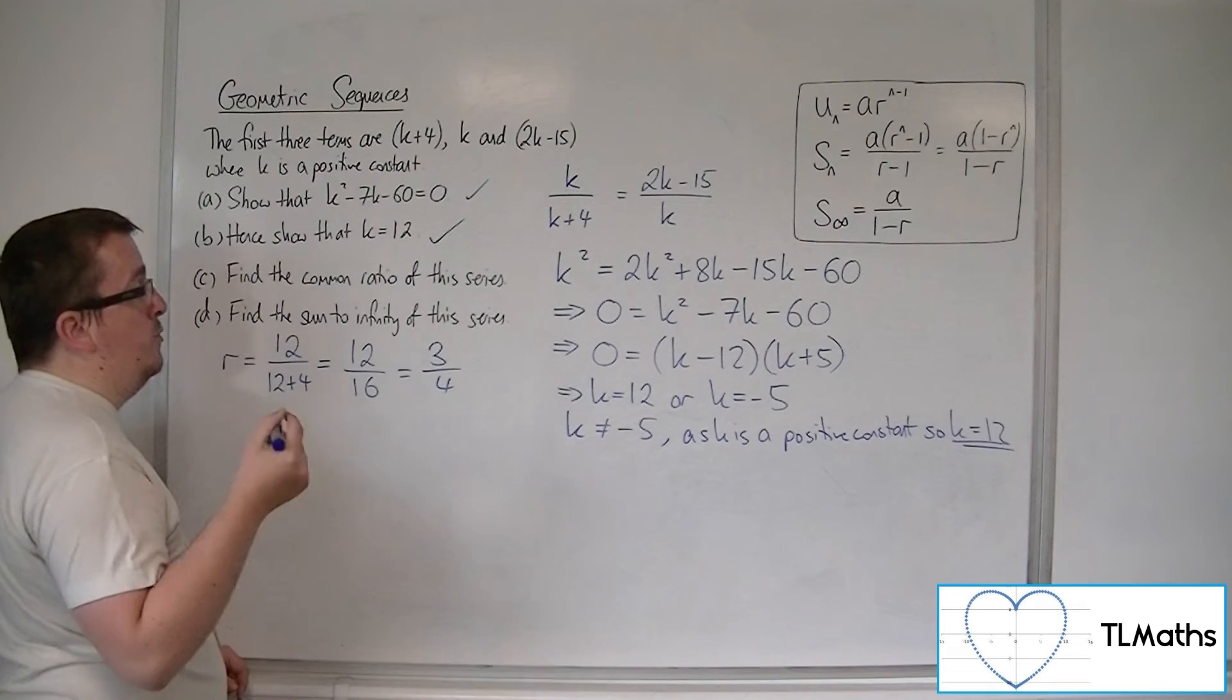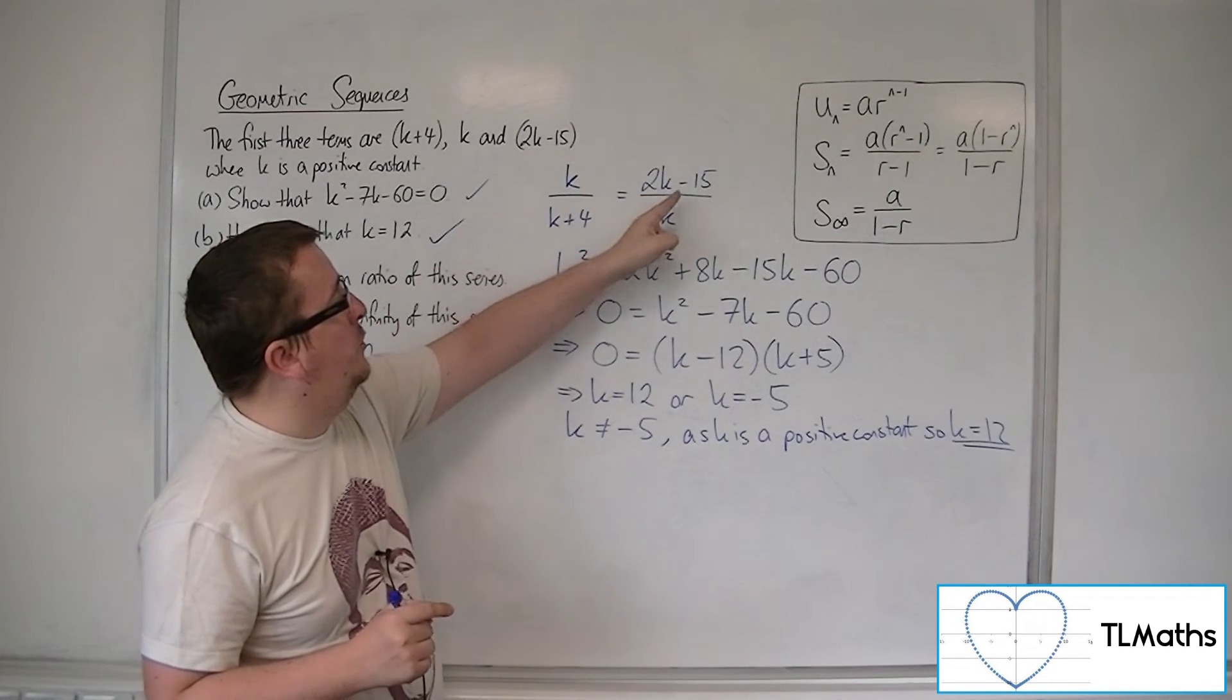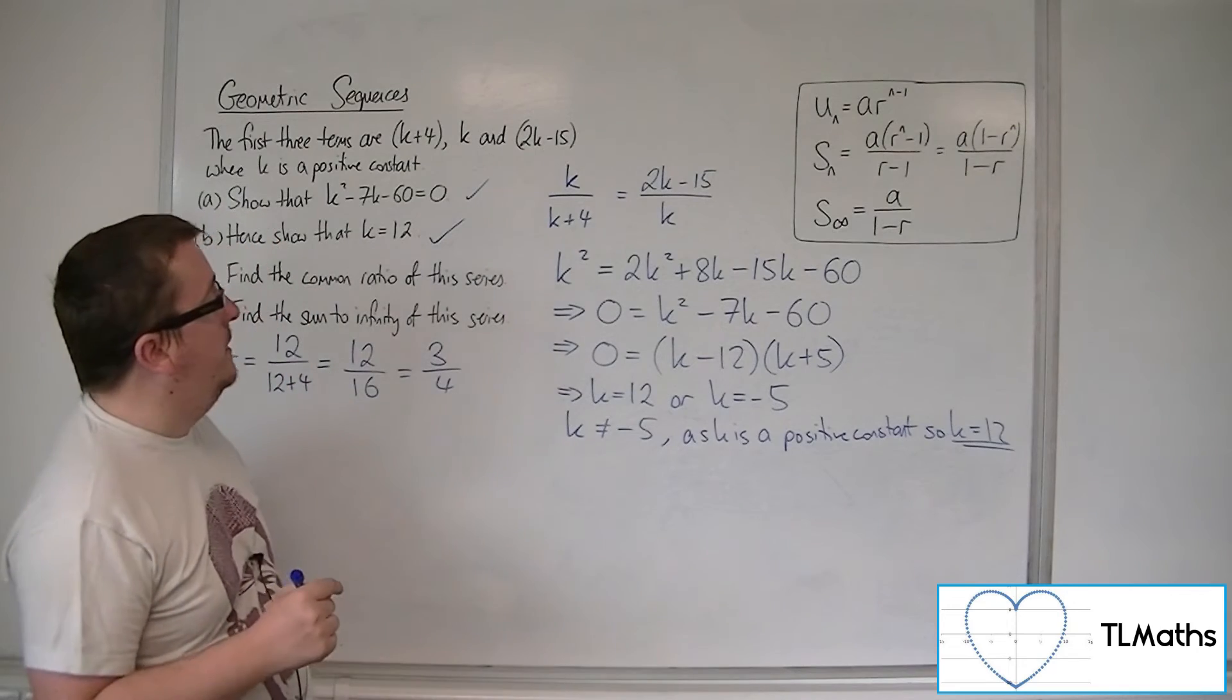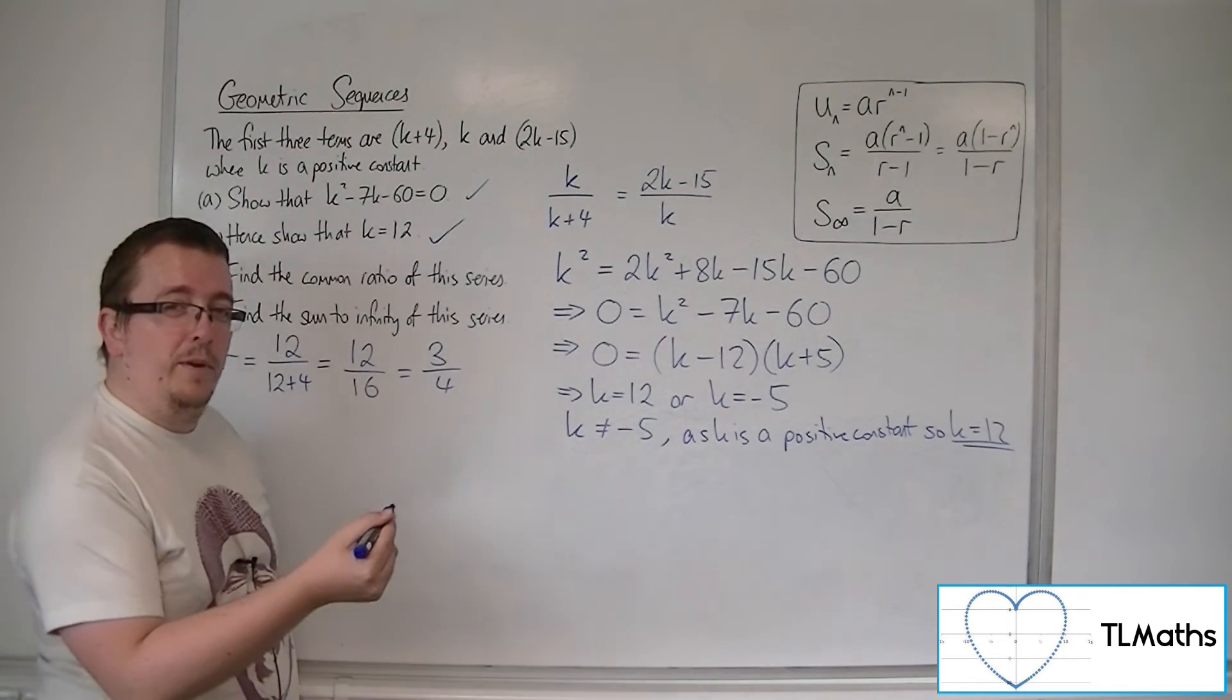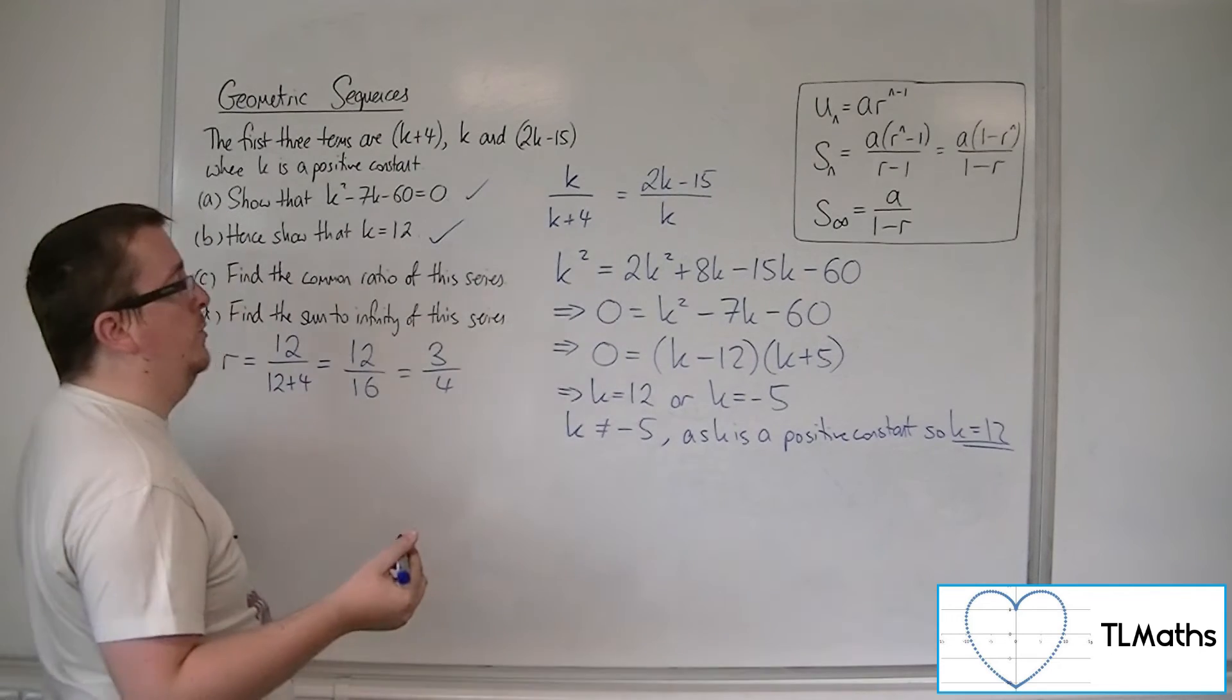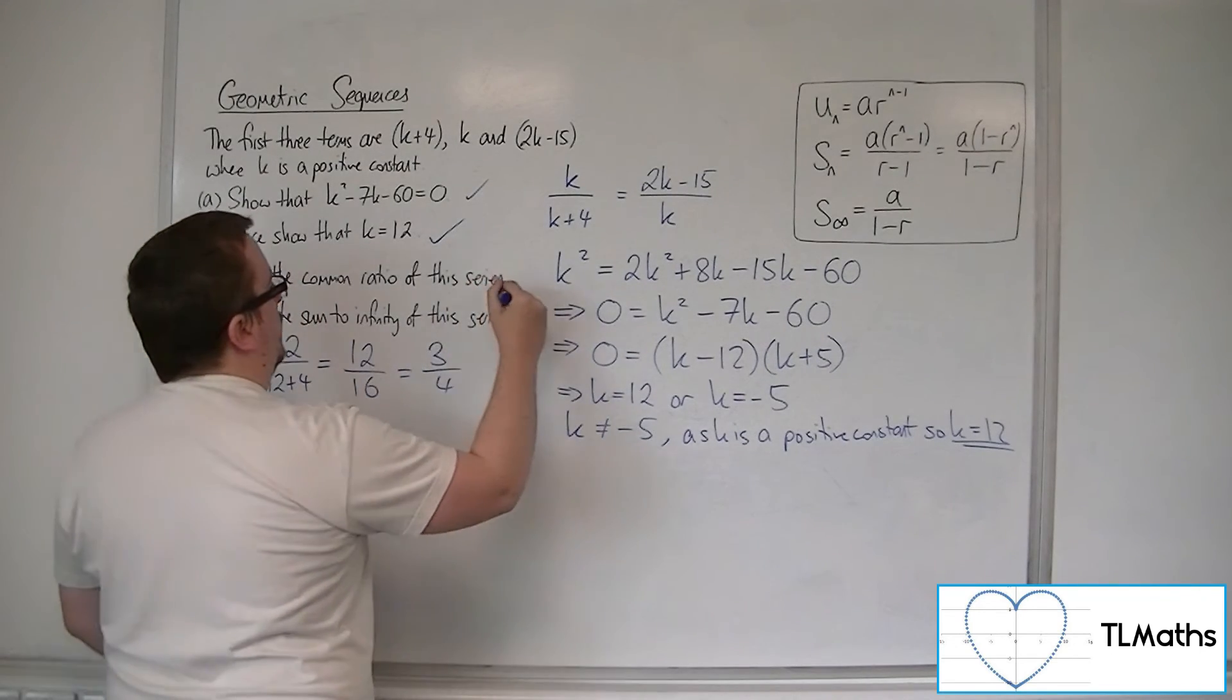Now, you should get precisely the same result by putting it into this one. So 2 lots of 12 is 24, take away 15 is 9. So 9 over 12, dividing top and bottom by 3, we get down to the 3 quarters again. So it works in either. So that is the common ratio.